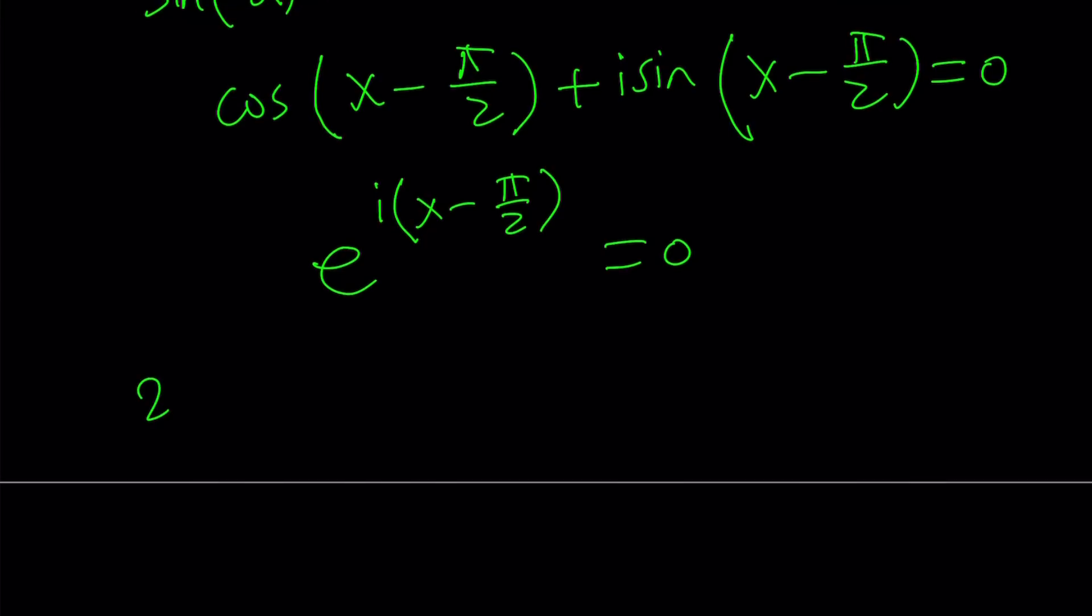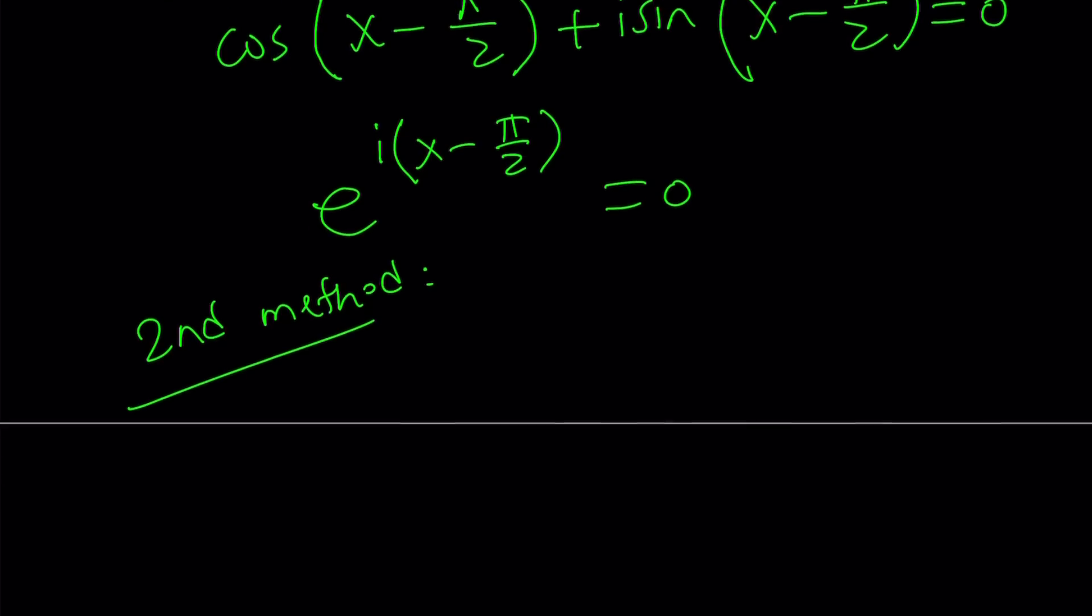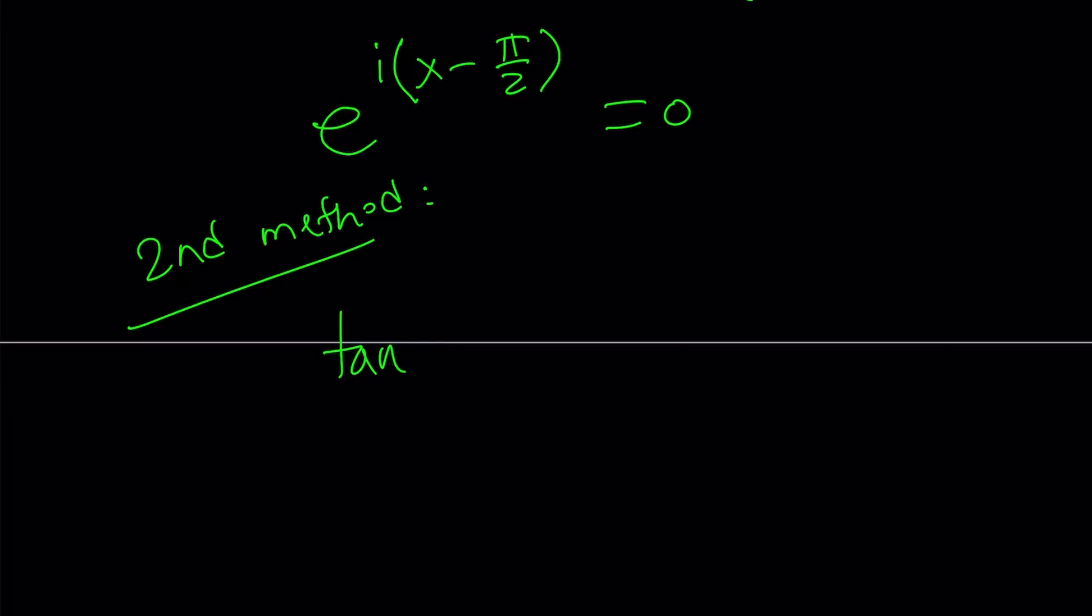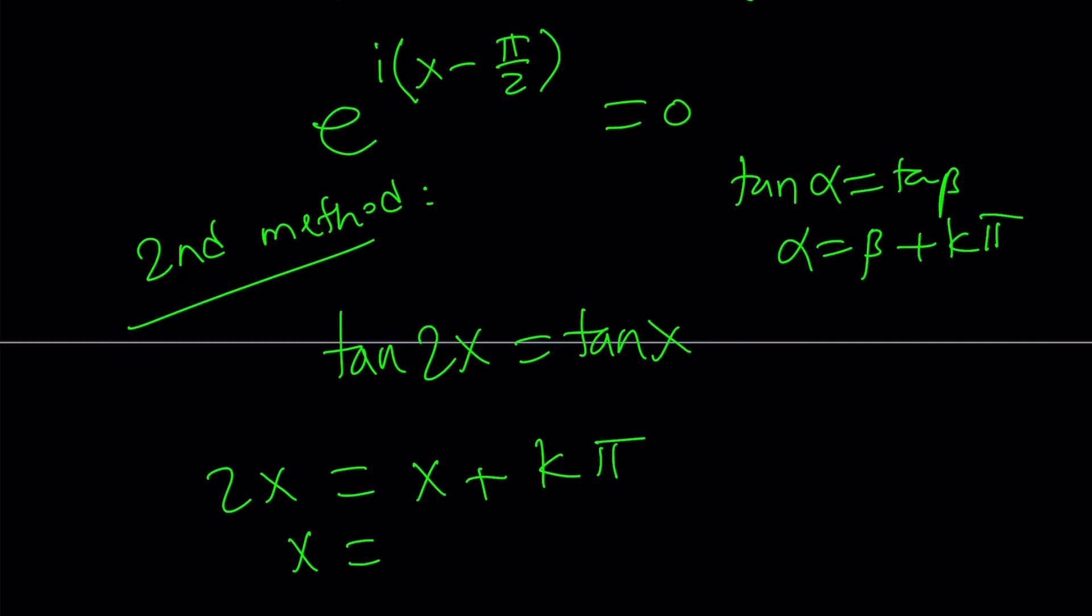Let's go ahead and talk about the second method. And I'm also going to, well, did I say second formula? I meant second method. I'm not coming up with a second formula. Second method involves the following. When we have an equation with tangent, we can safely look at it this way. If you have tangent alpha equals tangent beta, you can safely say alpha equals beta plus some k times pi. So let's do the same thing. 2x equals x plus k pi. Subtract x. x equals k pi. And k is an integer.